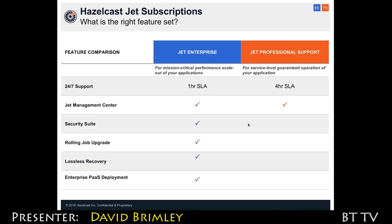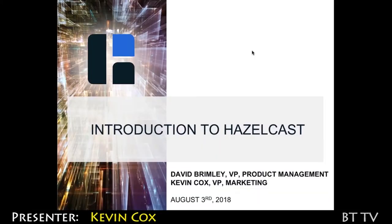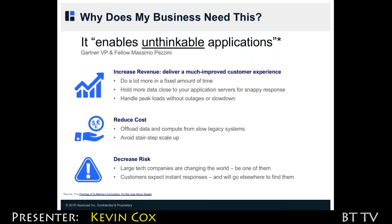Jet is completely open source. You can go to github.com/Hazelcast and grab the Jet code, or you can download Jet and use it completely for free. We've got a whole bunch of demo applications that are on GitHub, and you can get to them via the website as well. Customers come to us because they have unbelievably stringent service level requirements. Hazelcast and IMDGs are one of the most important technologies that you've never heard of, but you're mostly using in your everyday life. It enables unthinkable applications.